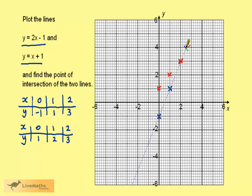So drawing the first line, through the blue crosses, and label y equals 2x minus 1. The second line goes through the red points. Draw and label.